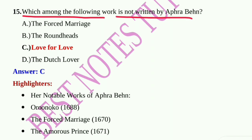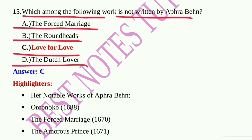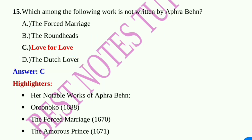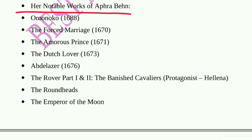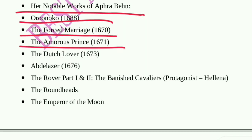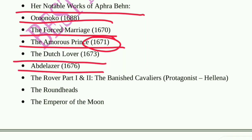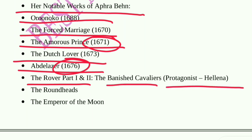Question number 15: Which of the following works is not written by Aphra Behn? Option A: The Forced Marriage, Option B: Round Heads, Option C: Love for Love, Option D: The Dutch Lover. Option C, Love for Love, is correct — that is by Congreve. Aphra Behn's notable works include Oroonoko (1688), The Forced Marriage (1670), The Amorous Prince (1671), The Dutch Lover (1673), Abdelazer (1676), and The Rover.